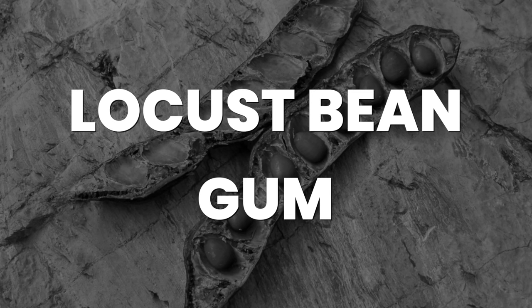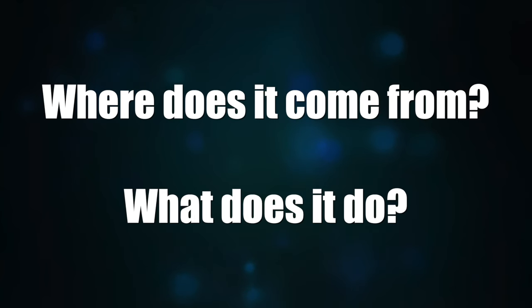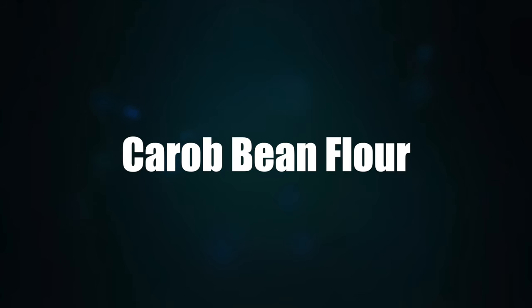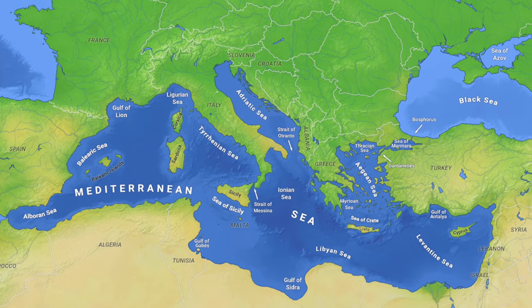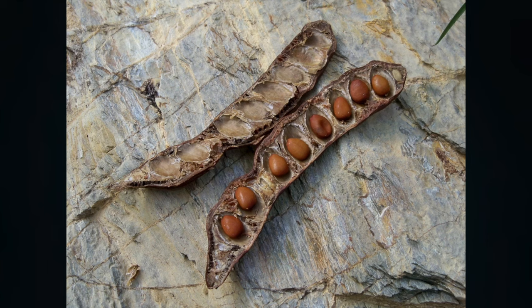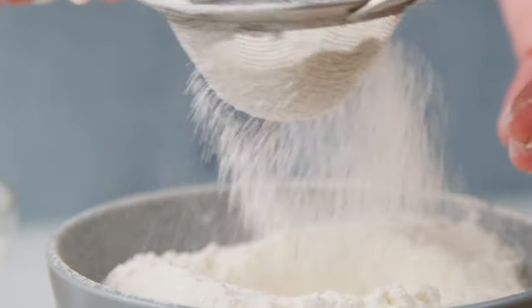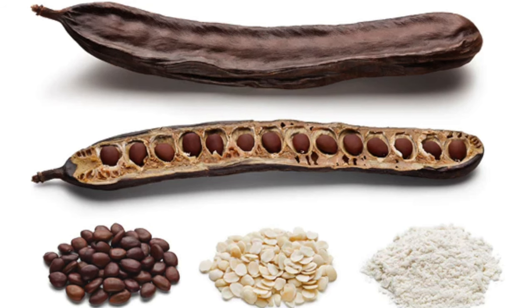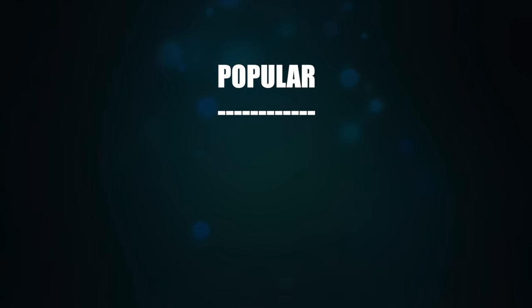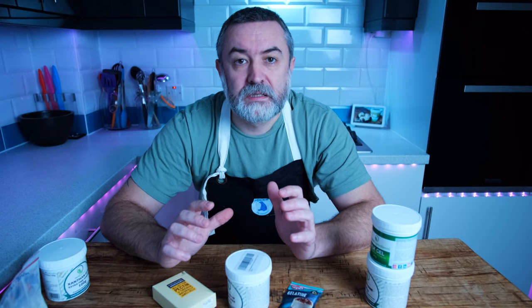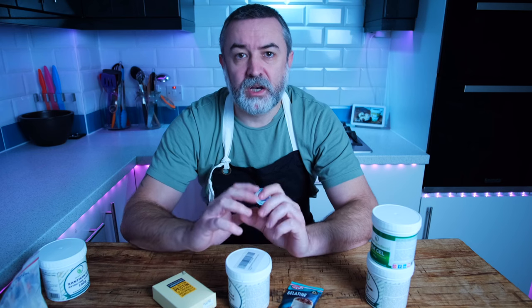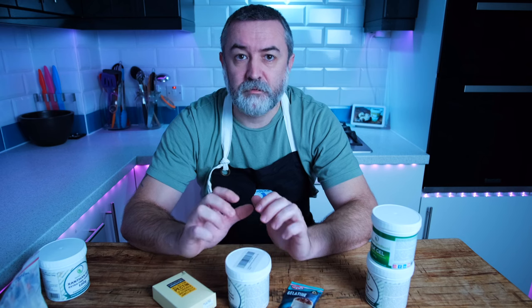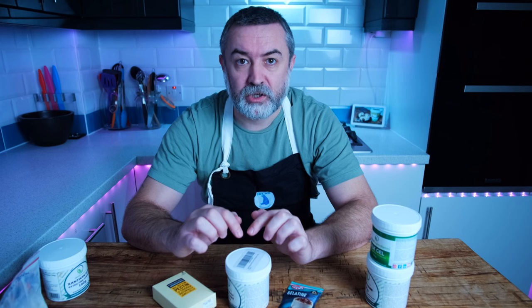Locust bean gum — what is it, where does it come from, and what does it do? Locust bean gum, shortened in many places to LBG, is also known as carob bean flour, and it's made from the seeds of the carob tree. It's quite common in Mediterranean places and has been used as a thickener in cooking for hundreds, if not thousands, of years. Locust bean gum is very popular because it has one of the best ice crystal reduction capabilities. It will assist with reducing ice crystal size formation in your ice cream. If you have a very cheap machine, this will really help improve the texture.